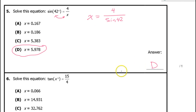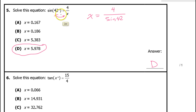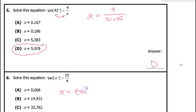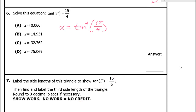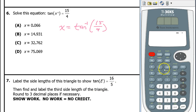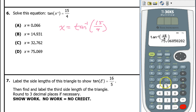When the variable is inside the trig function, that's when you use the inverse trig function. So x equals inverse tangent of 15 over 4. Putting that in the calculator — 2nd tangent of 15 over 4 — gives 75.069, which is D.